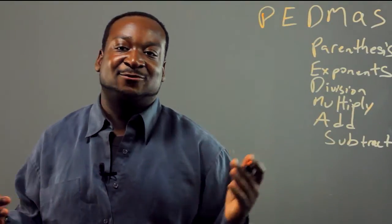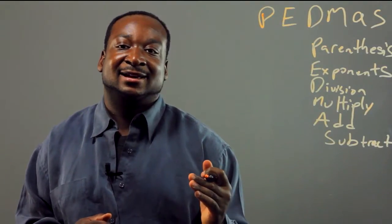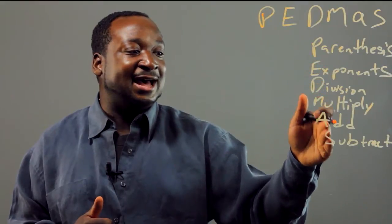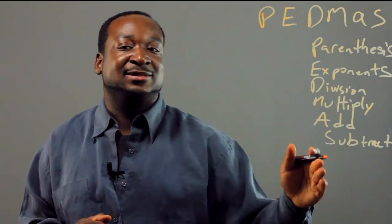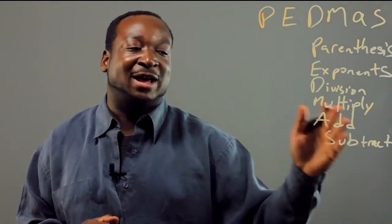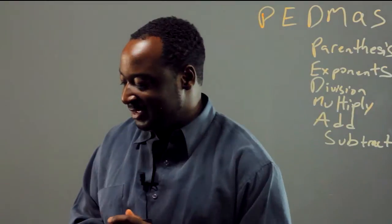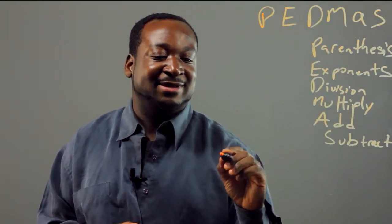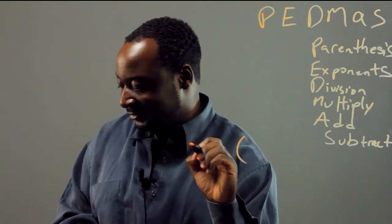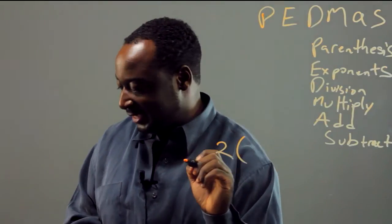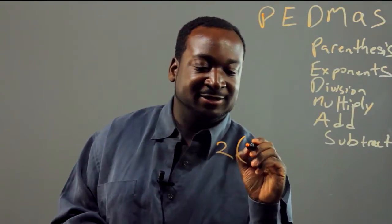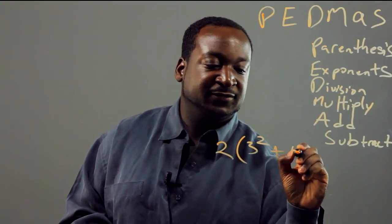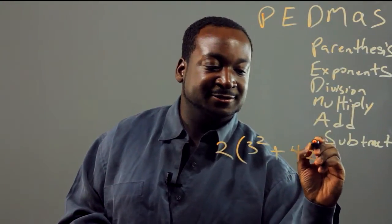Here's our basic way of solving terms. You always want to stick to these guidelines because if you do something wrong, you'll come out with the wrong value. So let's say we have the term 2 times 3 squared plus 4 times 2.